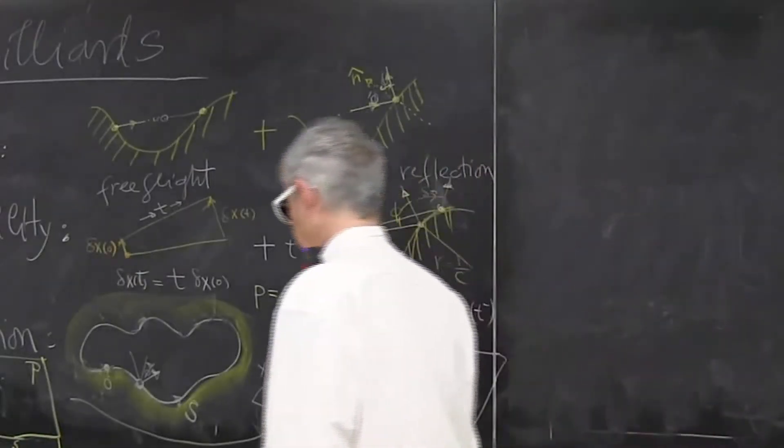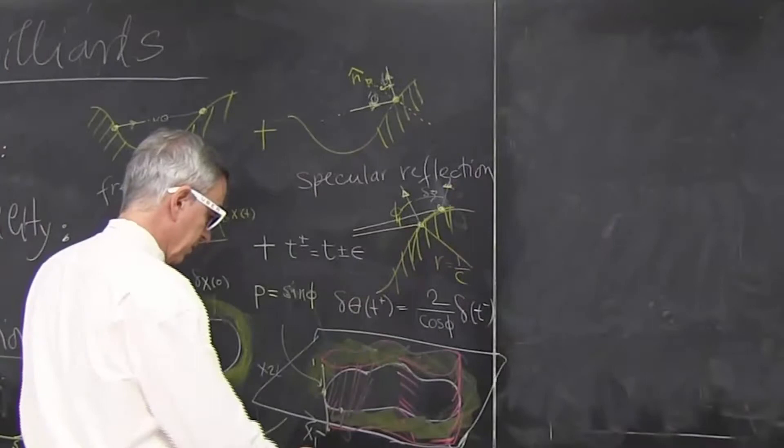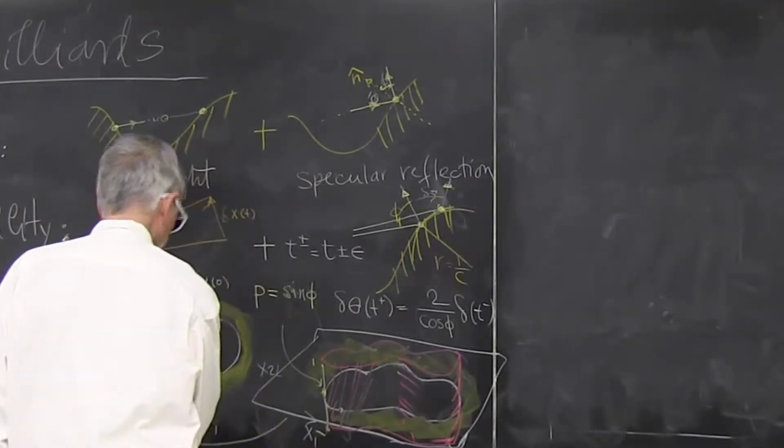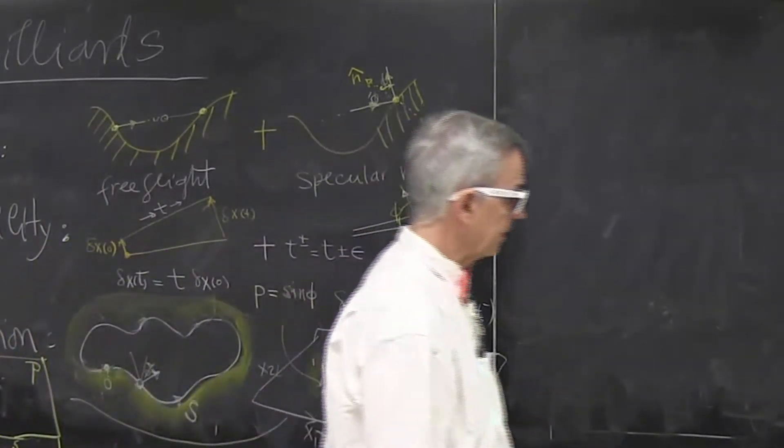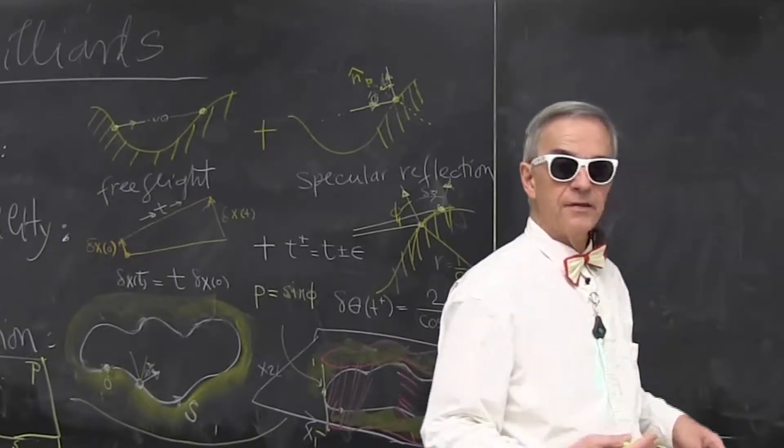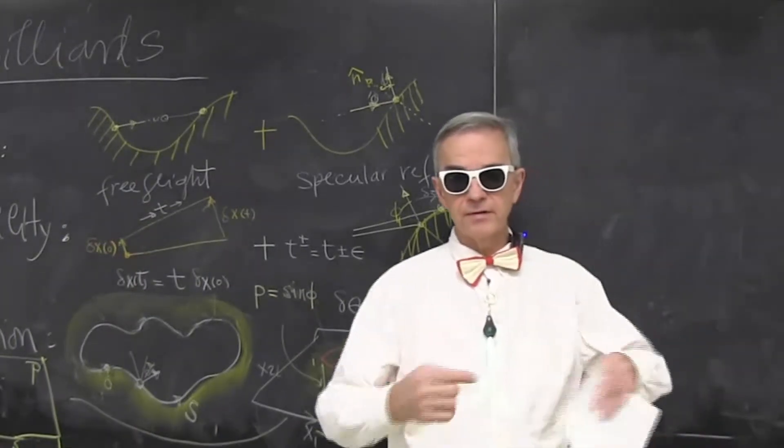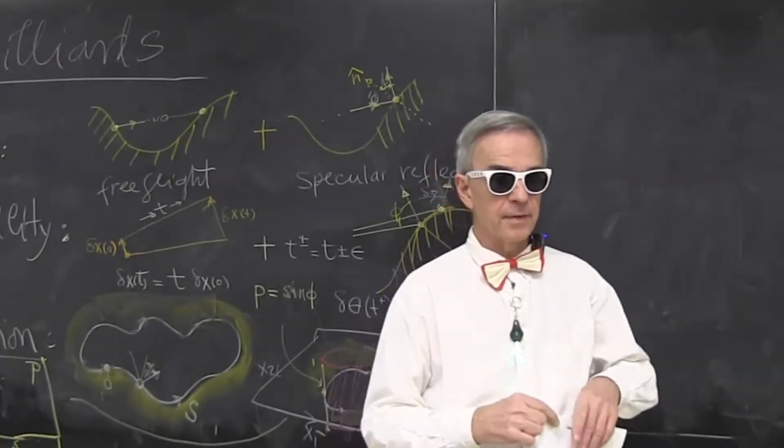And then there is one particular example of a billiard. It sort of plays the role of harmonic oscillator for chaotic dynamics.